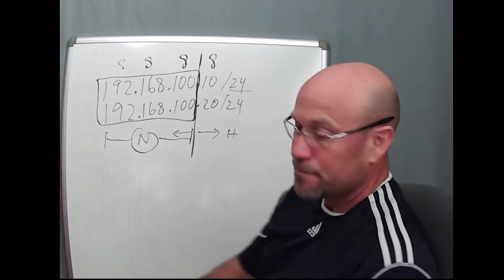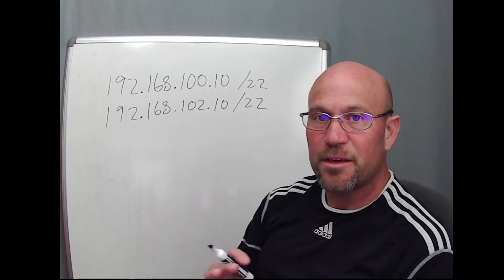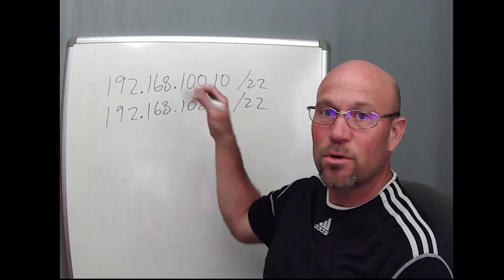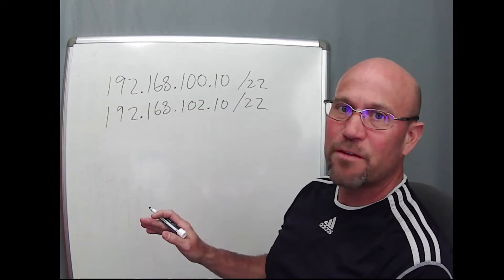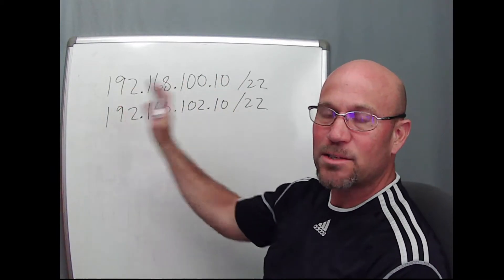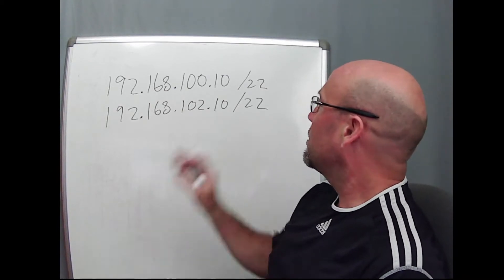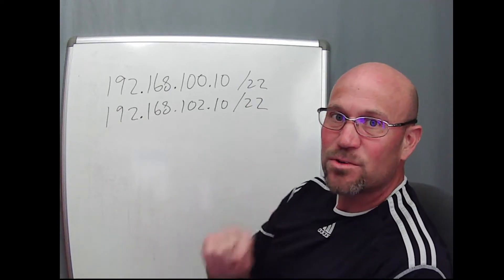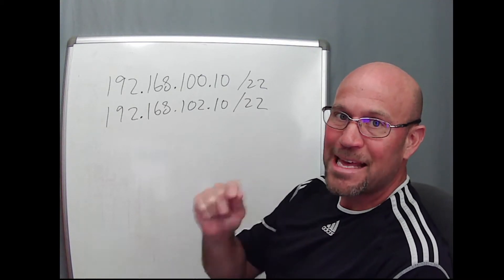Now, here's where it gets difficult. So in the previous slash 24 example, you didn't even have to convert decimal to binary because you could look at it in decimal form and tell right away on the slash 24 byte boundary that both network IDs were identical, and easily you could state that they were on the same subnet. This is a little more difficult.